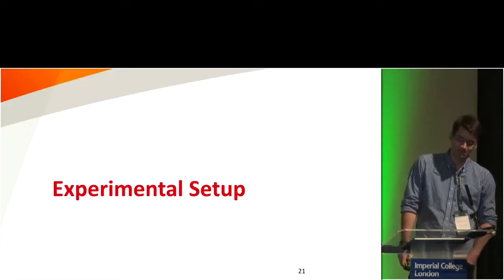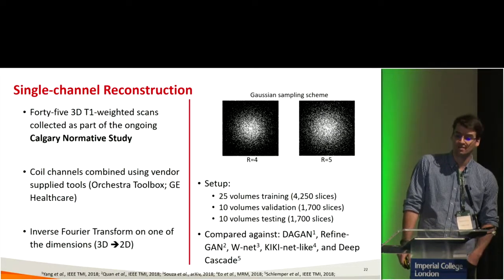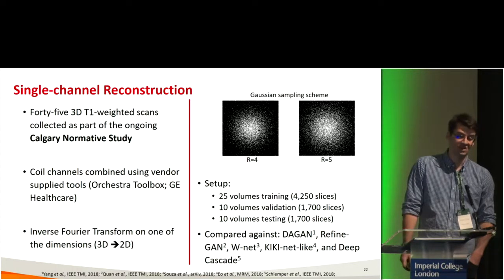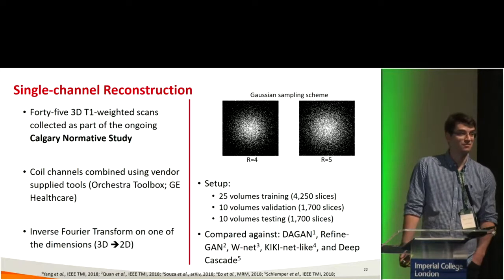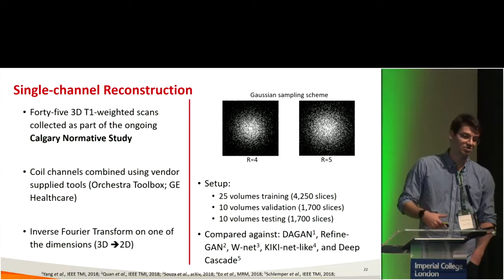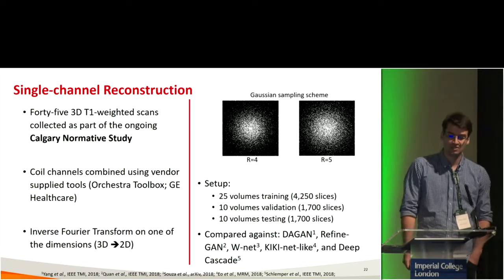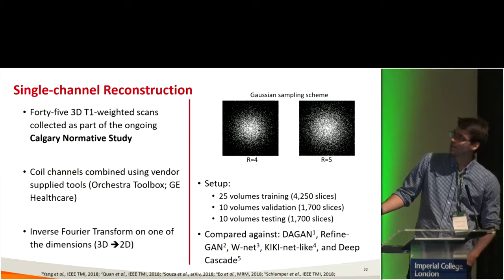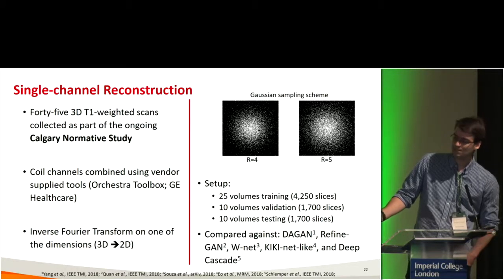For the single-channel reconstruction experiment, I used 45 3D T1-weighted scans collected in Calgary. Coil channels were combined using vendor-supplied tools — Orchestra from GE Healthcare — then the inverse Fourier transform was applied along one dimension, reducing it to a 2D problem. I used 25 volumes for training, 10 for validation, and 10 for testing, with acceleration factors of 4 and 5. I compared against DAGAN, RefineGAN, W-Net, KikiNet-like, and DeepCascade — these all have publicly available code, except KikiNet-like which I implemented myself.